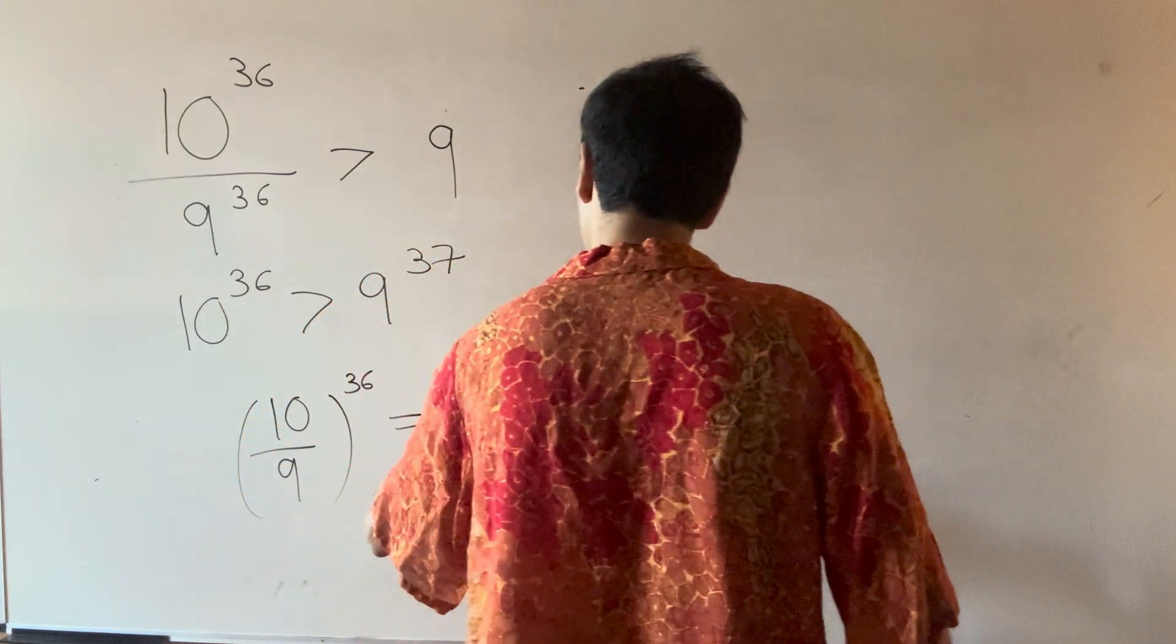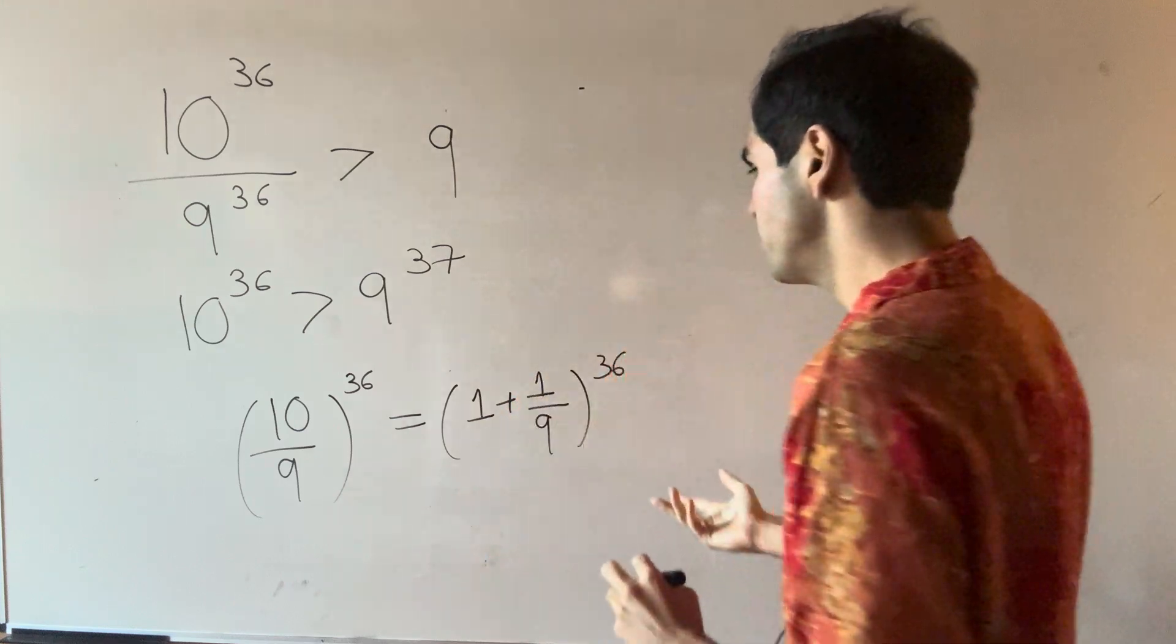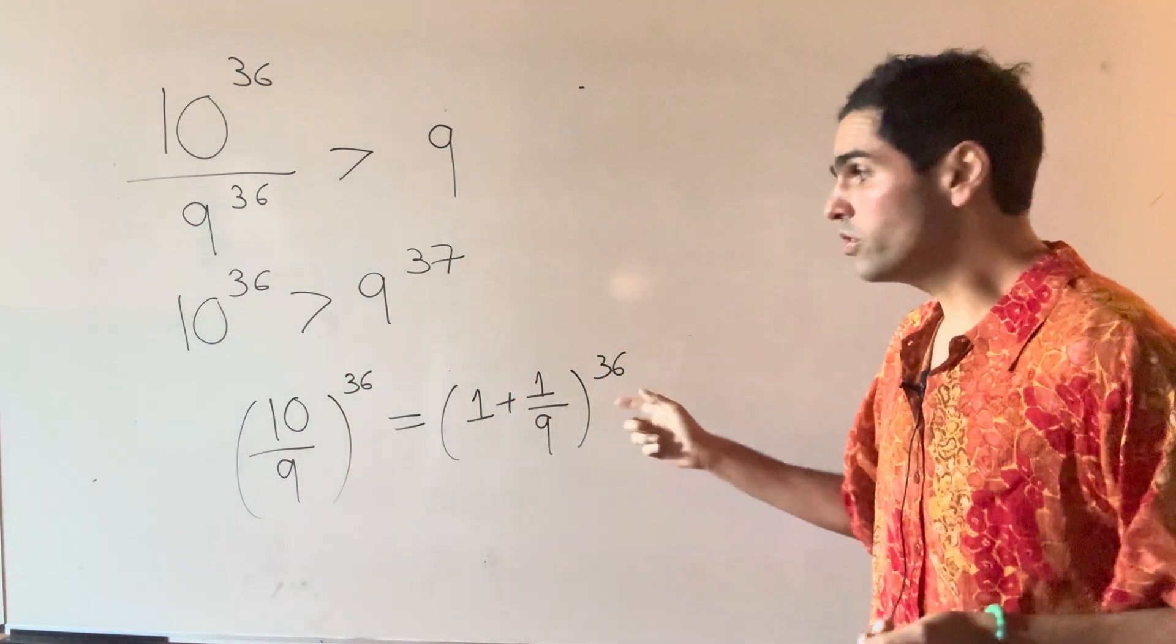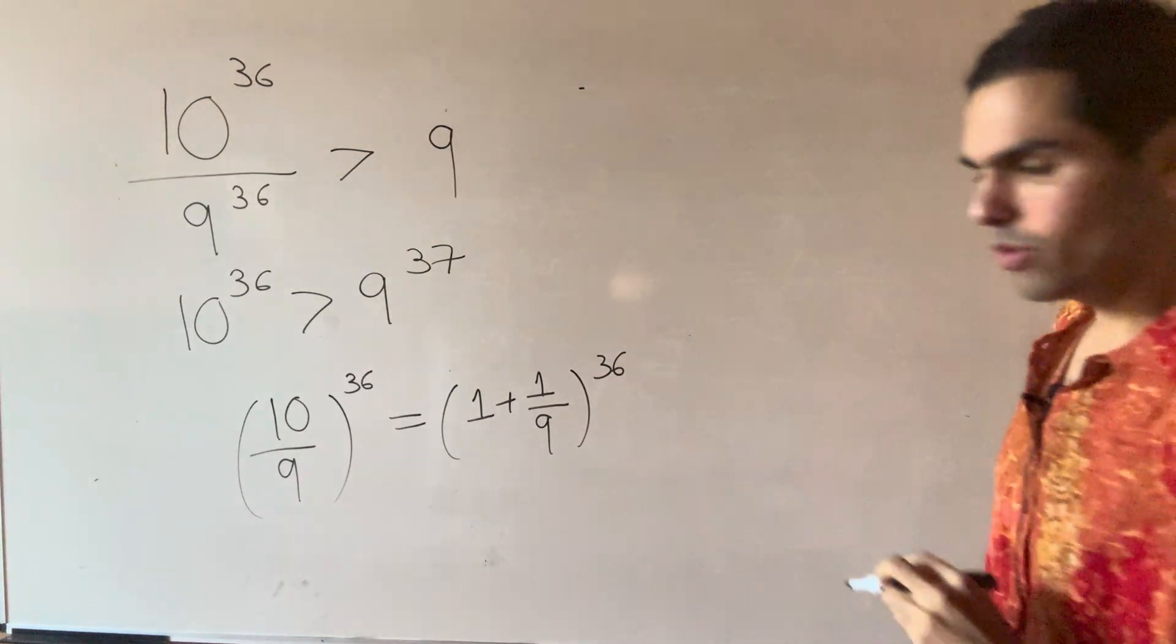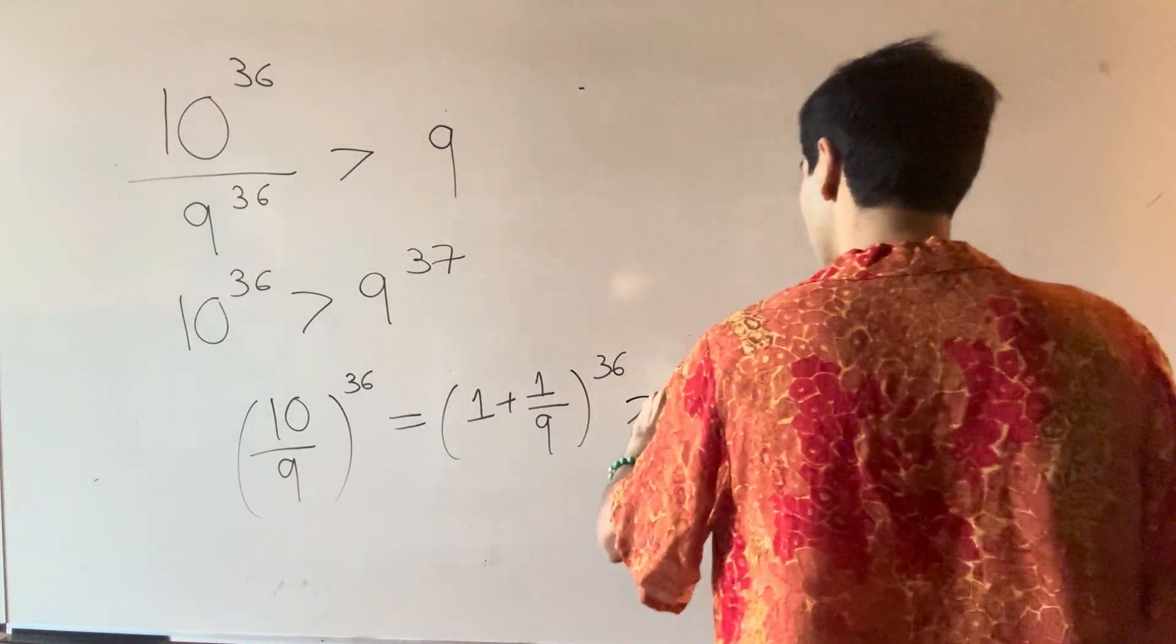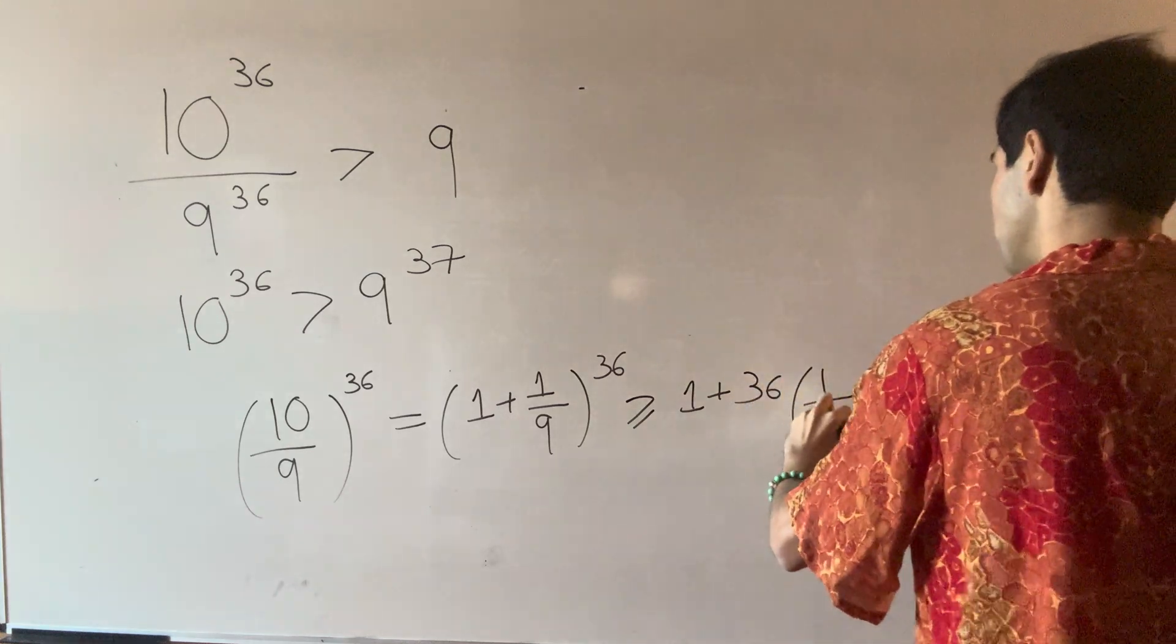Why not use it as (1 + 1/9)^36? Well, if you use Bernoulli's inequality just crudely, then you would get that this is bigger than 1 + 36 times 1/9.